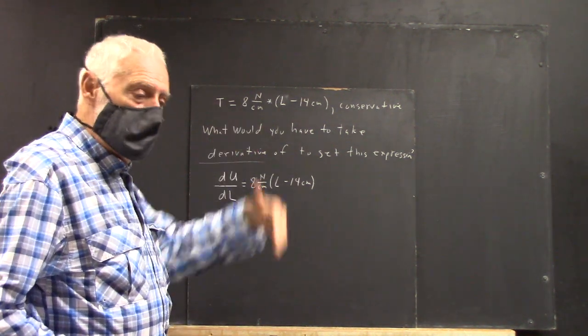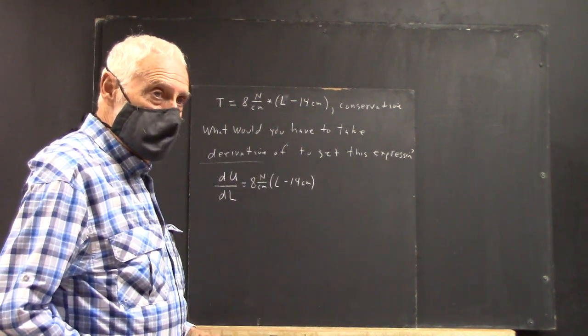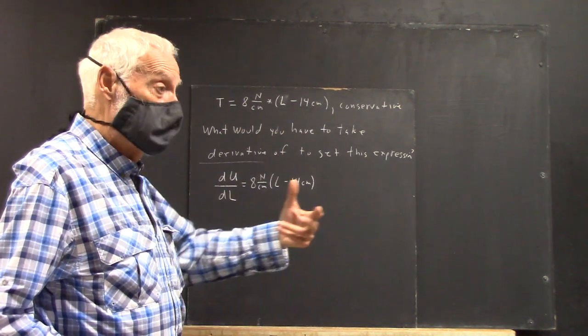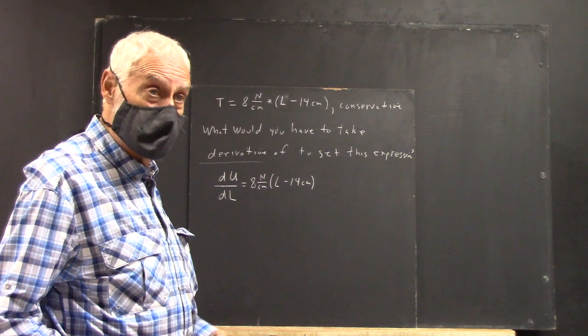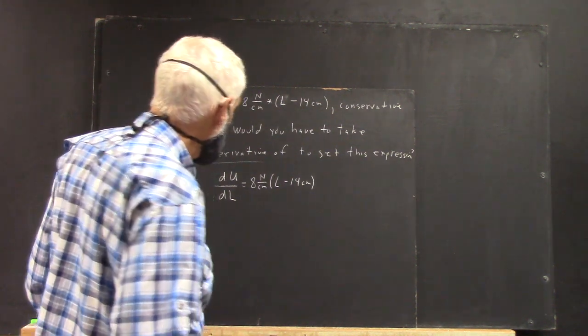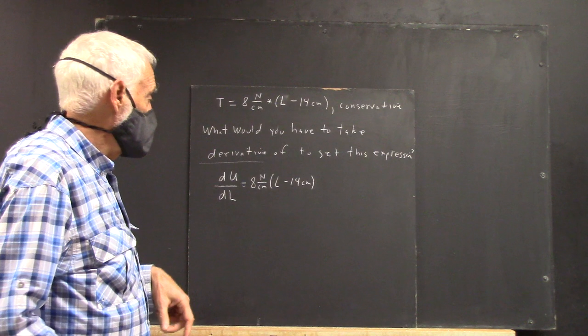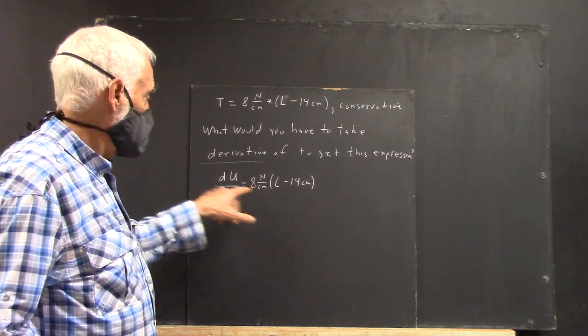Now, why is the slope of the potential energy function the force? Because of what the rise and the run is between two points of the potential energy function. So dU/dL has to equal this, and we want to find U.